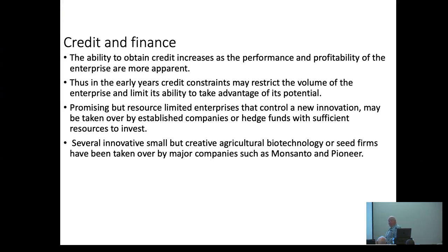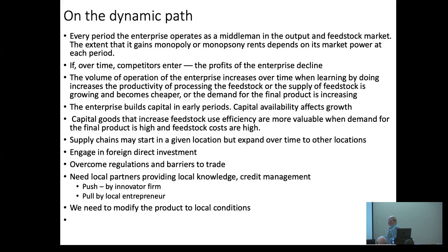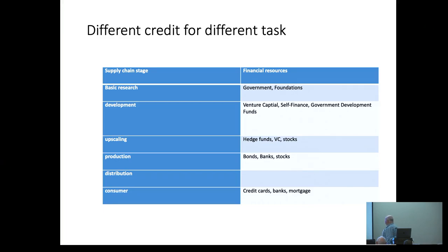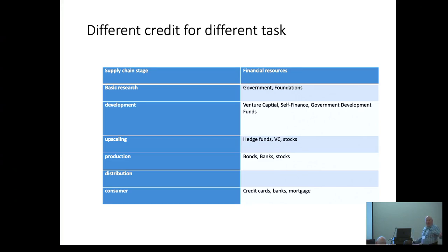When you speak with anyone who deals with supply chains, you know that credit is very important. For basic research, the credit comes from government. For development, it comes from venture capital, development funds, and self-financing. Countries that don't have mechanisms for development basically don't have new industries.